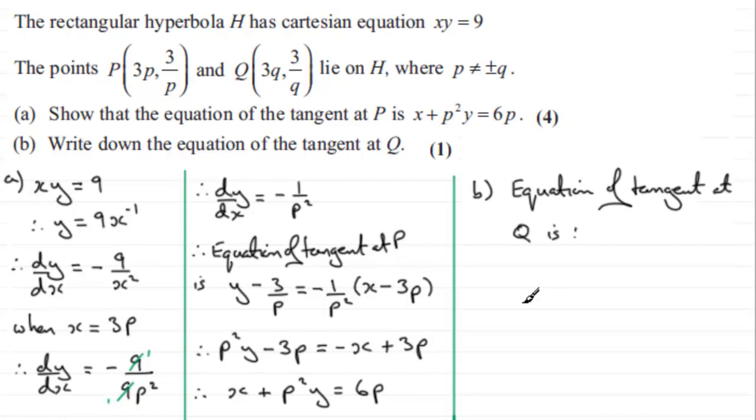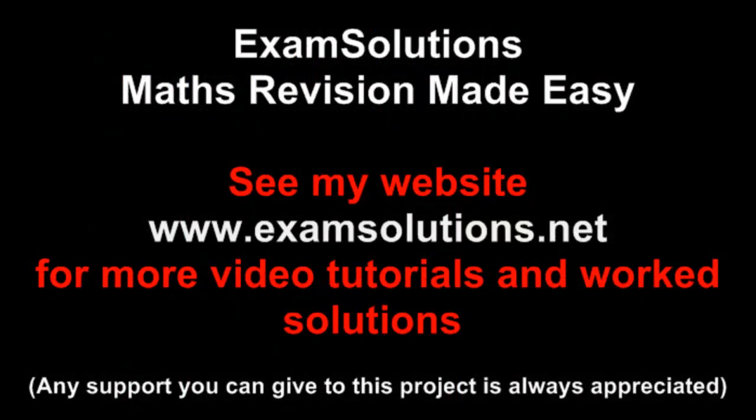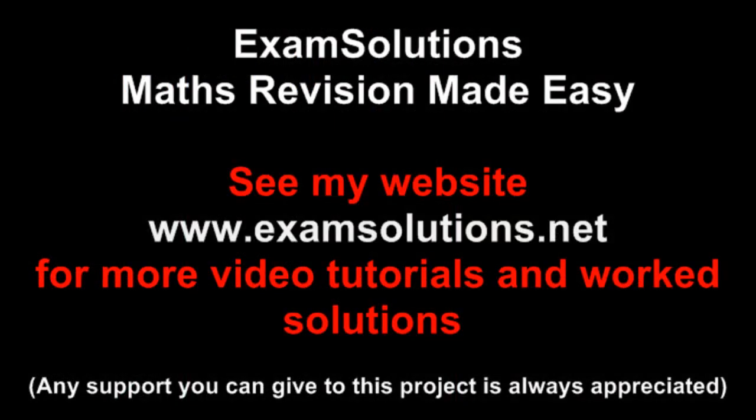and what's it going to be? Well, it's going to be X plus Q squared Y equals 6Q. So it's X plus Q squared Y equals 6Q. Alright? Thank you.